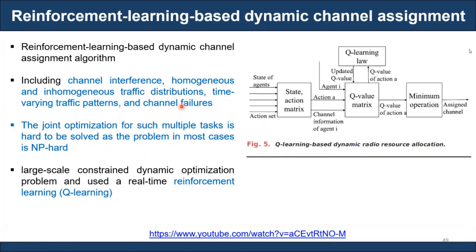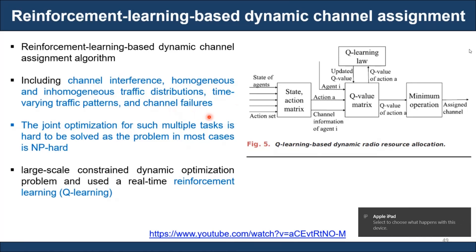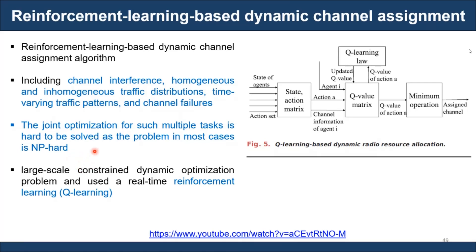The approach includes channel interference monitoring, homogeneous and inhomogeneous traffic distributions, and continuously monitoring changes in traffic patterns with respect to time. For example, peak-hour traffic during business hours is very high, while night traffic is low, and evening traffic may be somewhat higher. Based on these traffic patterns, resources can be assigned to minimize failures and improve performance. This optimization is essentially an NP-hard problem, and one can look for closed-form solutions to identify performance.